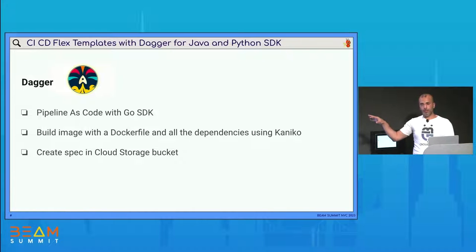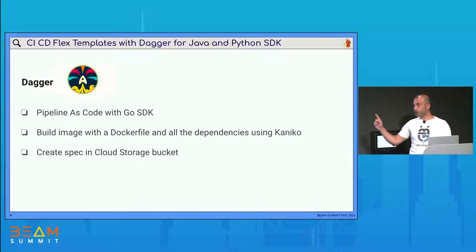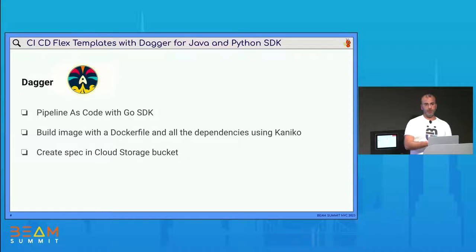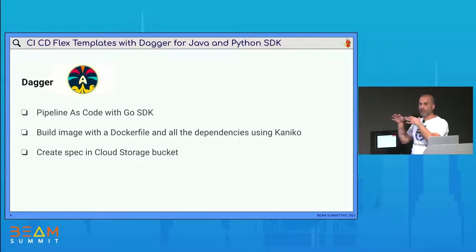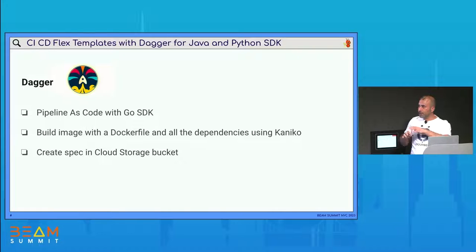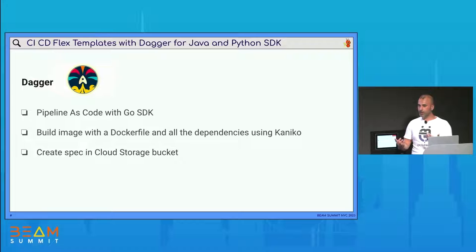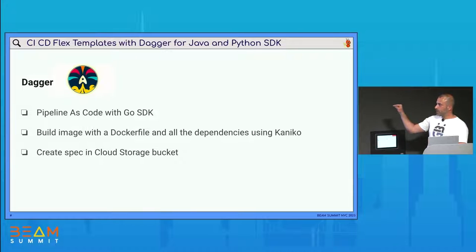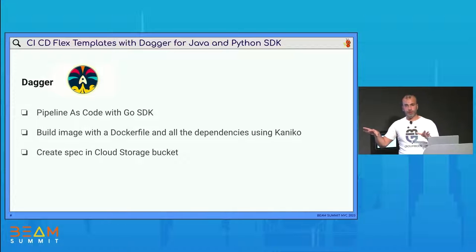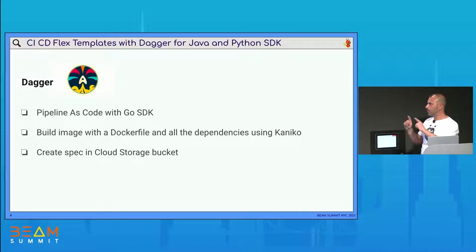At the end, we will show the same pipeline but with Dagger. Dagger is a tool created by the creator of Docker. The advantage of Dagger is that instead of using YAML for the CI/CD logic, we can use a programming language like Go, Python, or Node.js. This is an interesting approach because with code, we can more easily apply logic, error handling, and other constructs. I use Kaniko in this case because Dagger depends only on Docker, and for Docker-in-Docker, Kaniko works well.